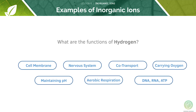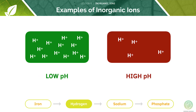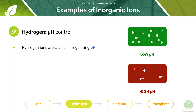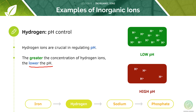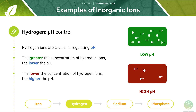What are the functions of hydrogen? These ions maintain the pH and help with aerobic respiration. Enzyme-controlled metabolic reactions are sensitive to pH. Hydrogen ions are important for regulating pH in organisms. The greater the concentration of hydrogen ions, the lower the pH. The lower the concentration of hydrogen ions, the higher the pH.